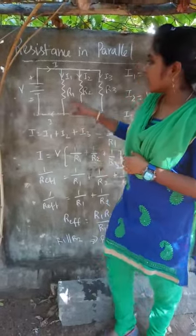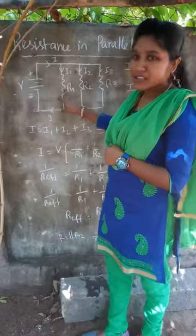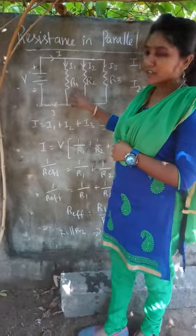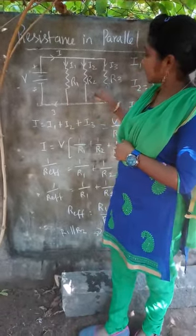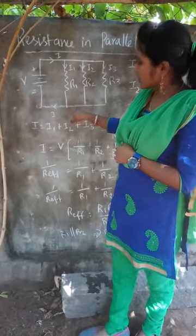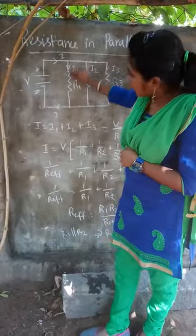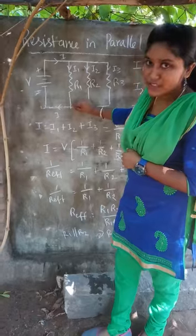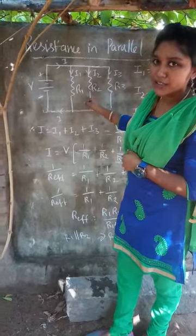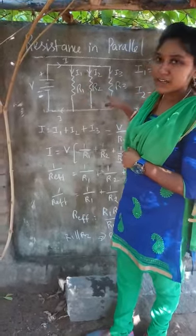So what is parallel? See here — consider three resistances connected in parallel. What is parallel? Both ends of each resistance are connected to the other resistances. This is what we call a parallel connection.